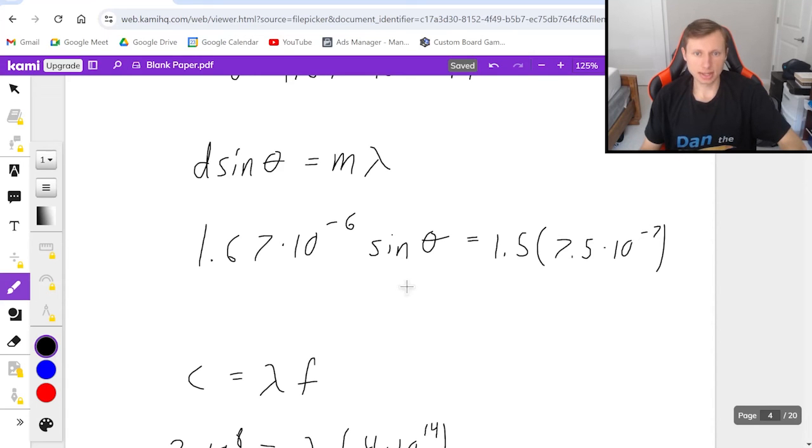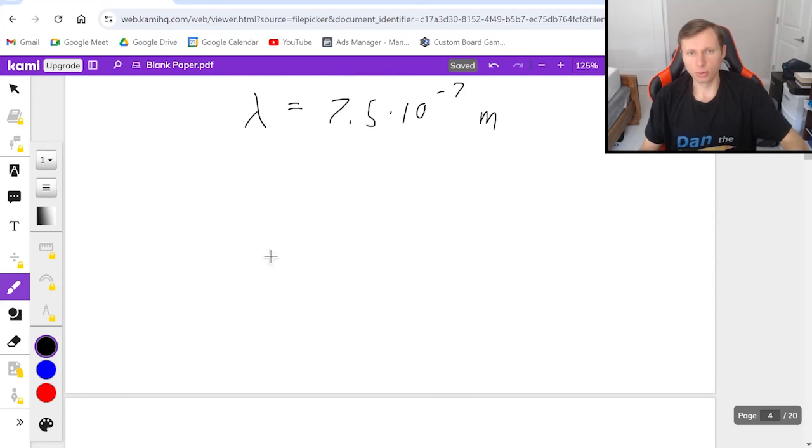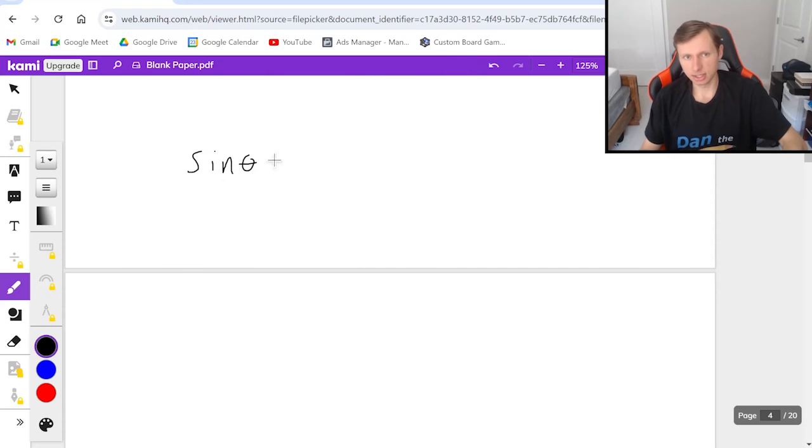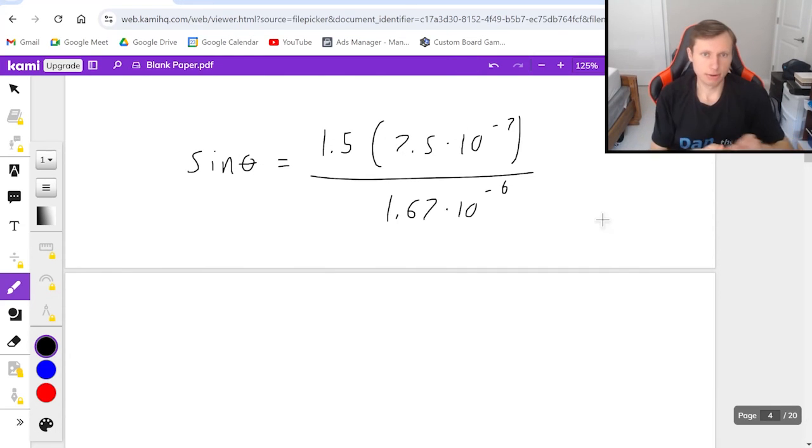So then if I want to solve for sine theta, got to divide that 1.67 times 10 to the minus 6th on both sides. And if I plug this in a calculator, then I'll get sine of theta equals 0.675.